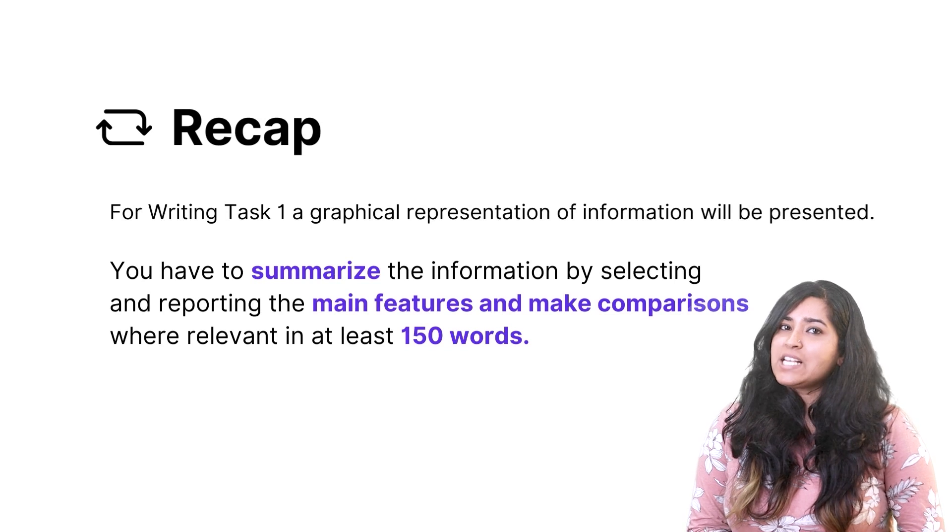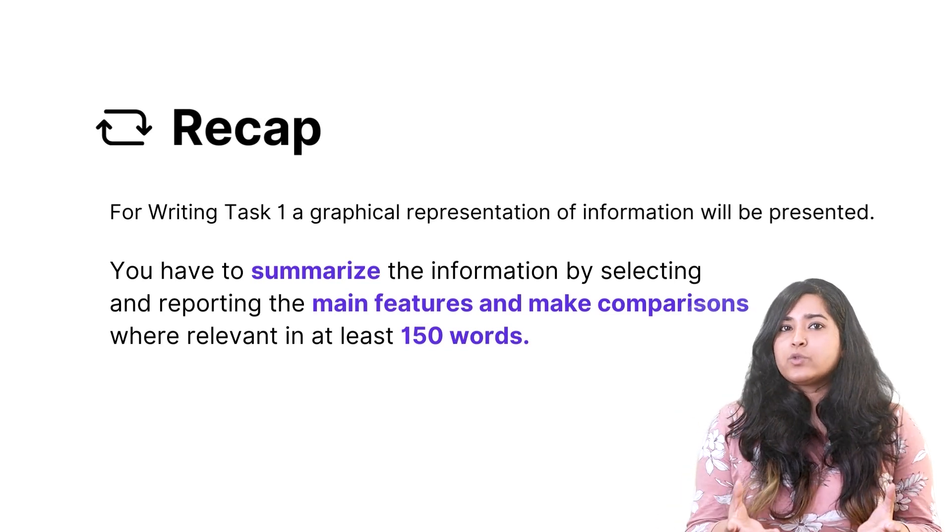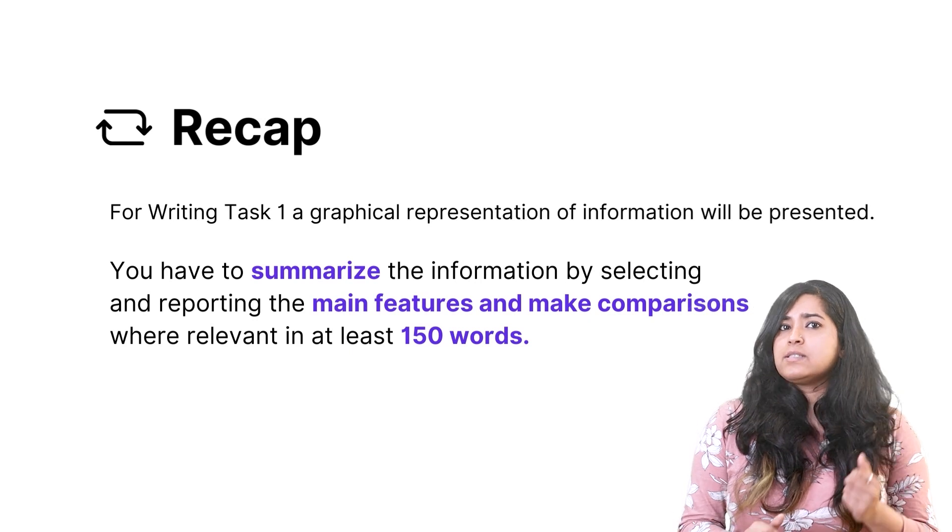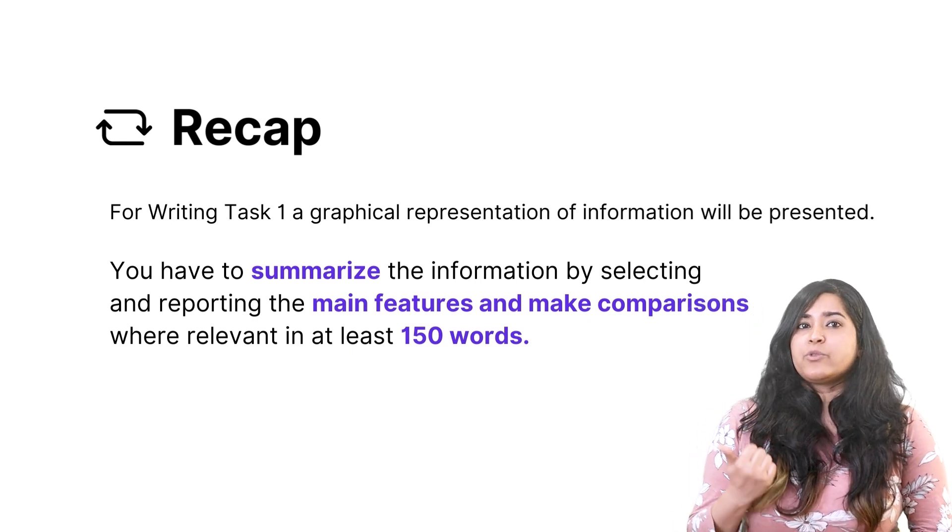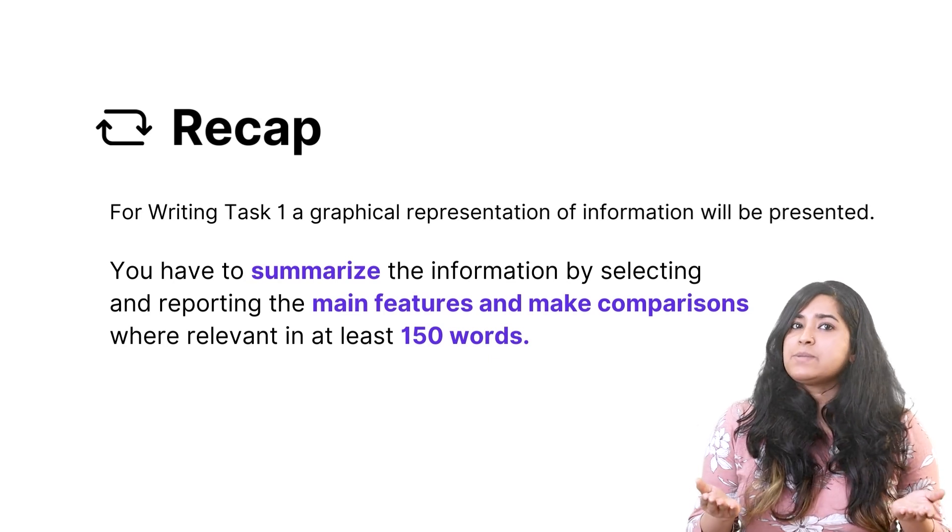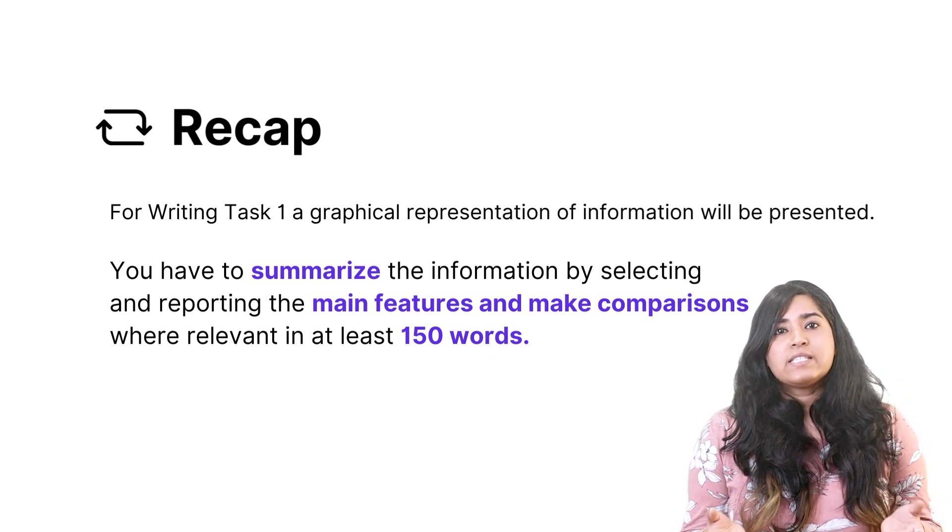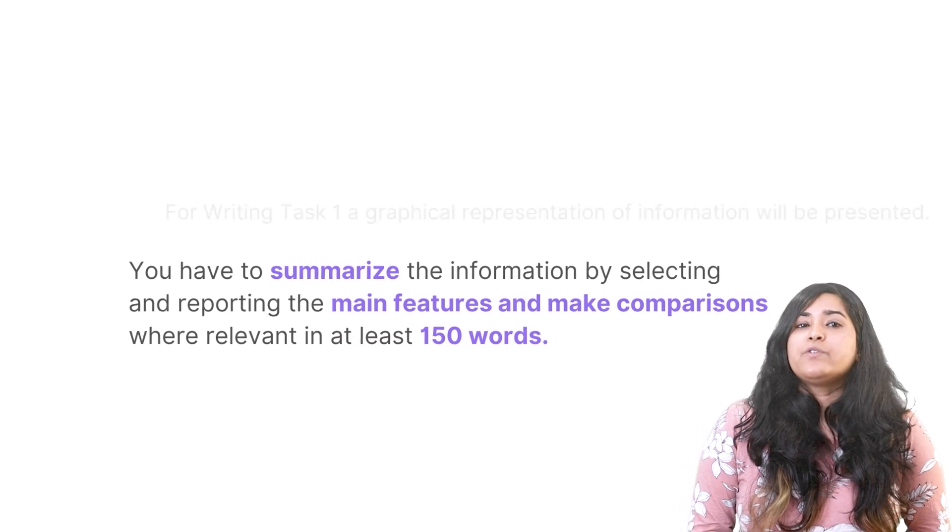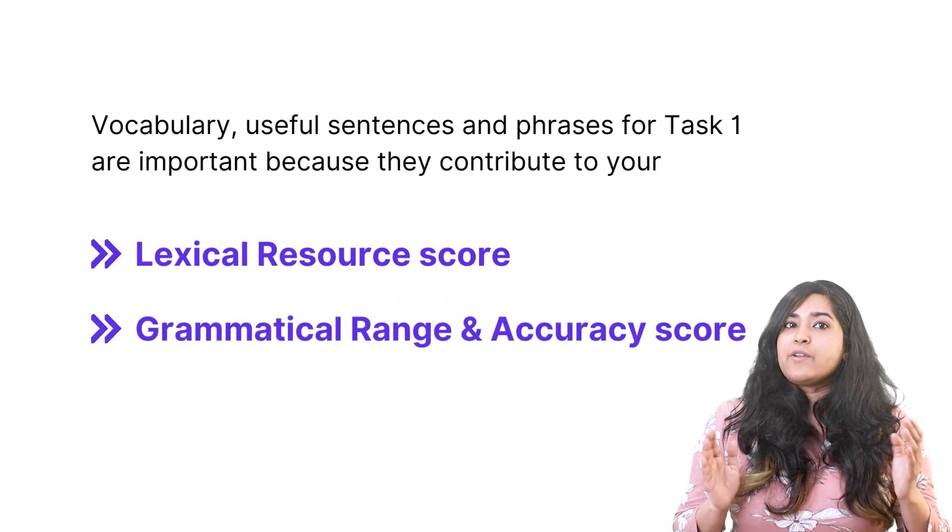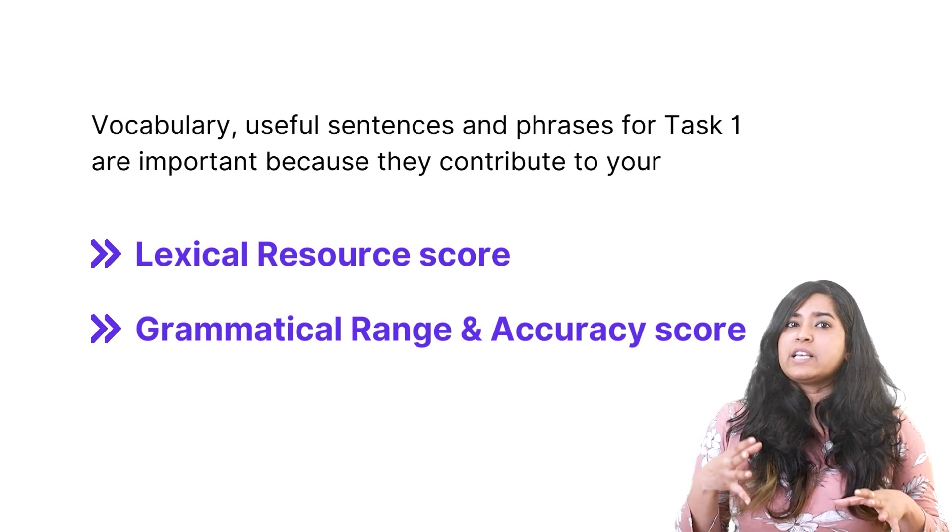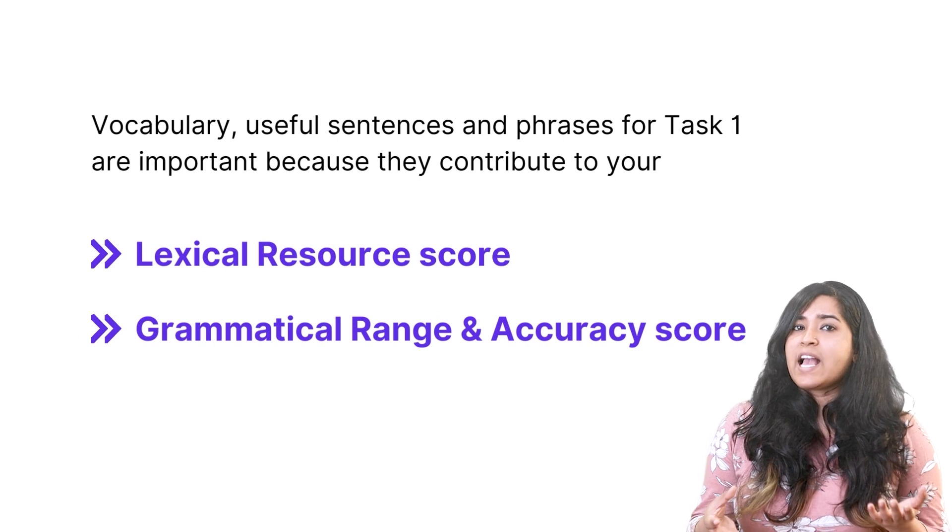Right, so we know that for writing Task 1, we'll be presented with a graphical representation of information. And as we saw in the previous lessons, they usually ask us to summarize the information by selecting and reporting the main features and making comparisons wherever relevant in at least 150 words. Now when it comes to vocabulary, useful sentences, and phrases for Task 1, it's actually important because they contribute to your lexical resource and grammatical range and accuracy score.